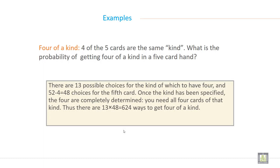There are 13 possible choices for the kind of which to have four, and 52 - 4 = 48 choices for the fifth card. Once the kind has been specified, the four are completely determined.